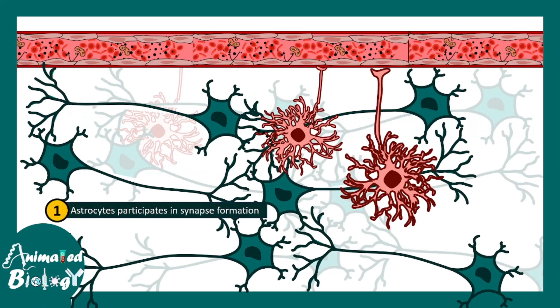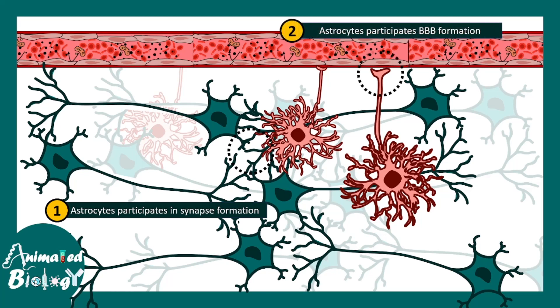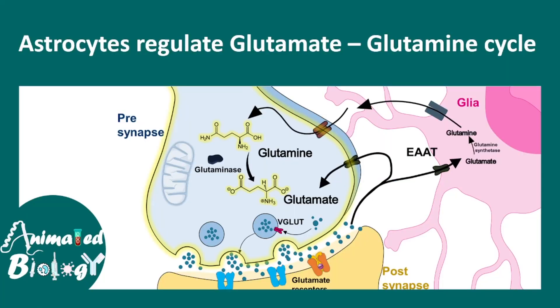Let's talk about the functions of astrocytes and how astrocytes are important for our brain. Astrocytes play a vital role in the brain — they participate in synapse formation and they regulate synaptic activity. Secondly, astrocytes participate in blood-brain barrier formation. Each of these two functions is very important for proper brain functionality and brain development as well.